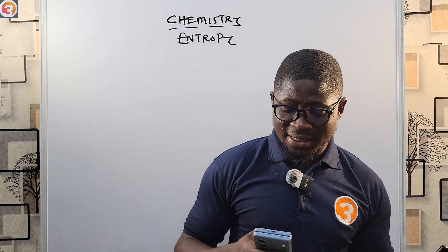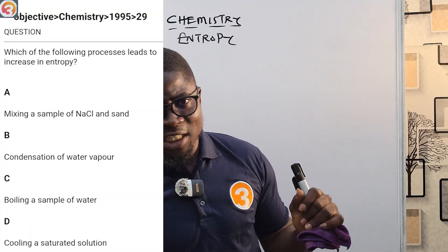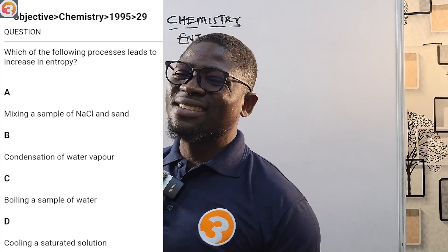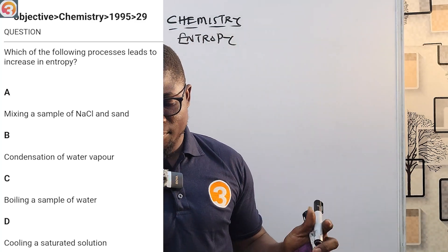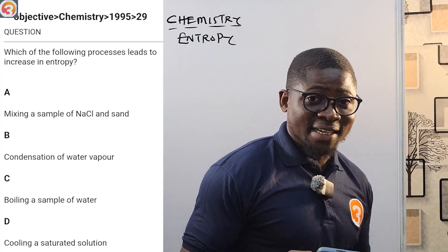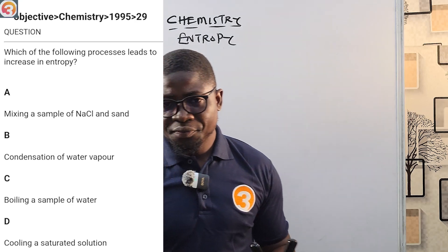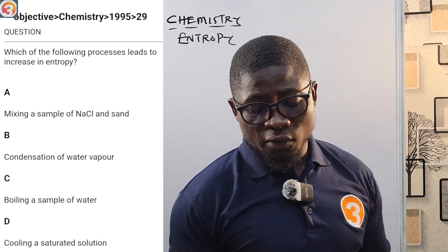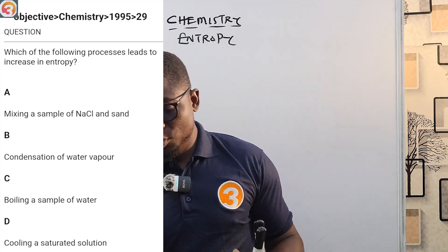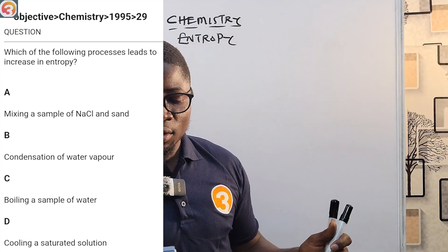They say: which of the following processes leads to an increase in entropy? Option A: mixing a sample of NaCl and sand. Option B: condensation of water vapor. Option C: boiling a sample of water. Option D: cooling a saturated solution.